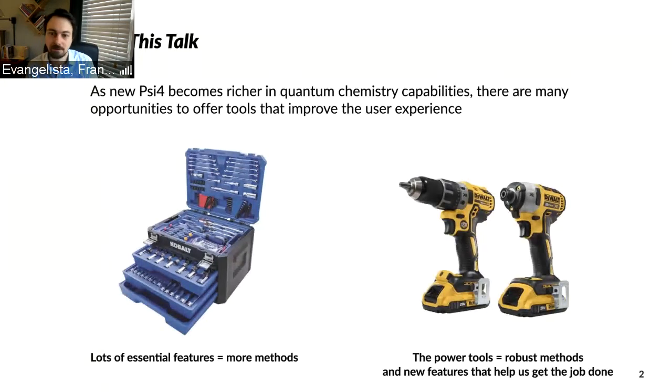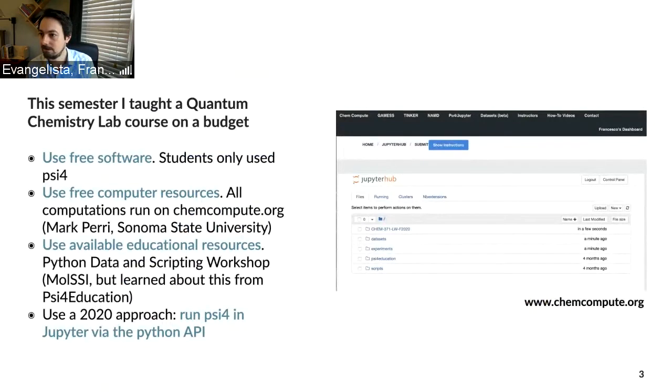The reason why I started to think about this issue is because I've been teaching a class this semester. I created a new class called Quantum Chemistry Lab which is a full course on quantum chemistry that covers only electronic structure theory, and the idea was to build this all open source. That means using free software, so the students only use Cypher. We use ChemCompute which is an amazing resource. We used all possible educational resources available, for example the Python Data and Scripting Workshop by the MolSSI, and I wanted to use a modern approach so only run Cypher through the API in Jupyter.